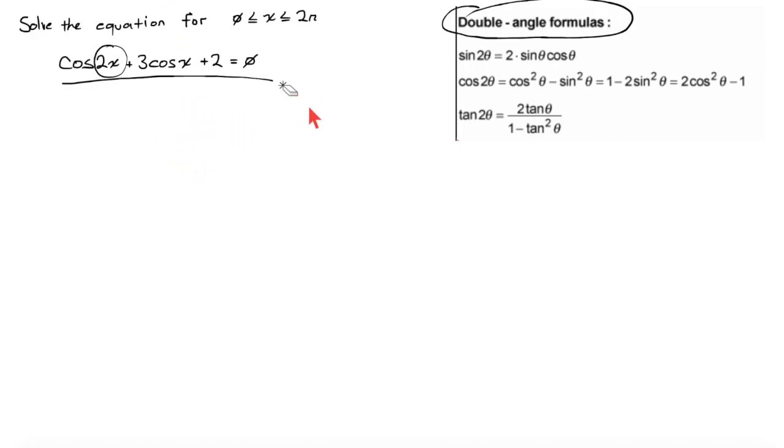So let's say we know that we're supposed to use an identity of some kind and let's say we try to use cosine of 2 theta because what we have here is cosine of 2x. Of course x is the same as theta.